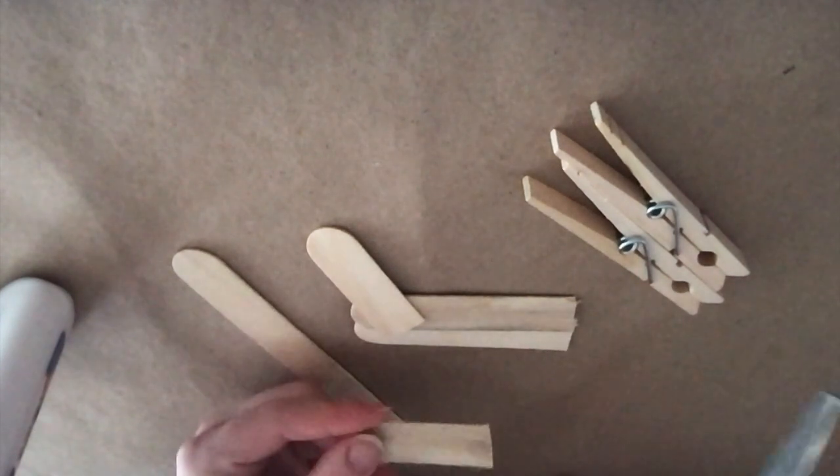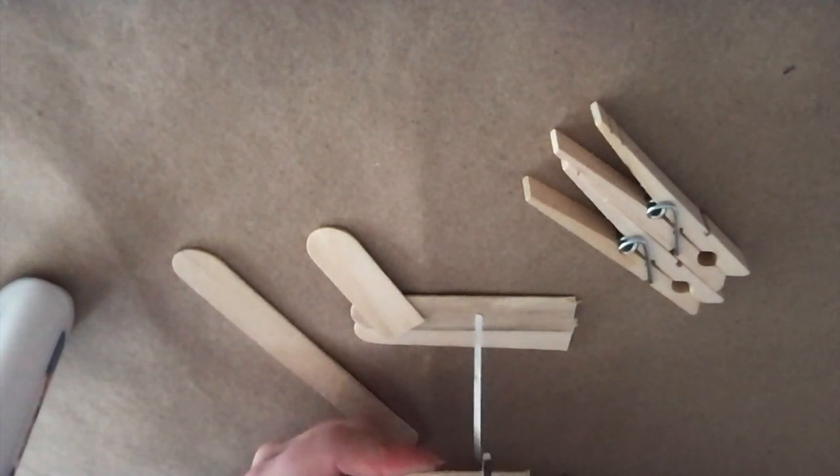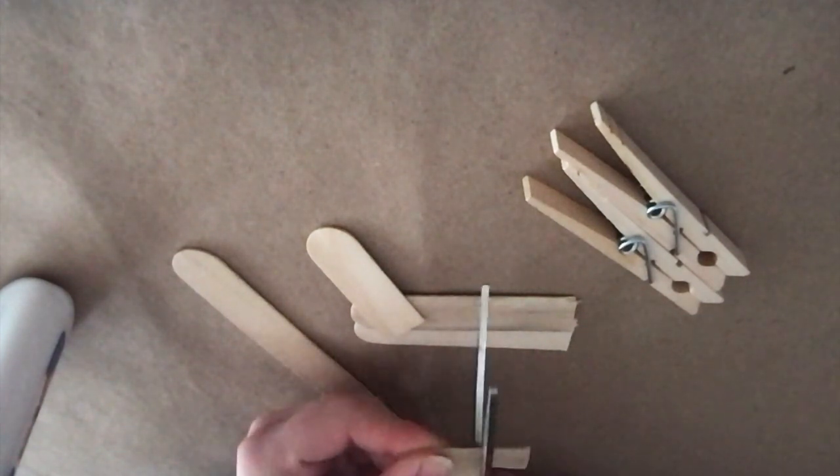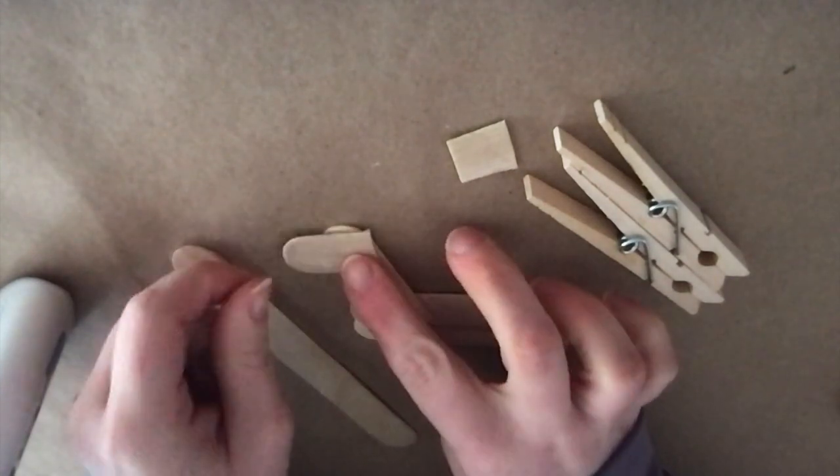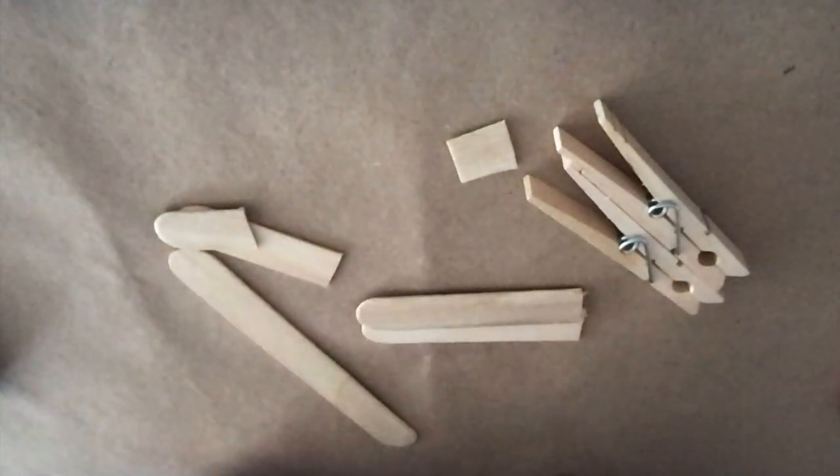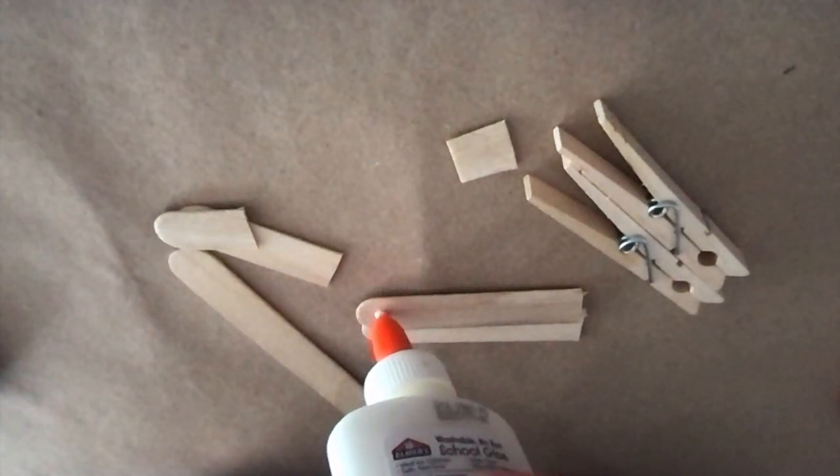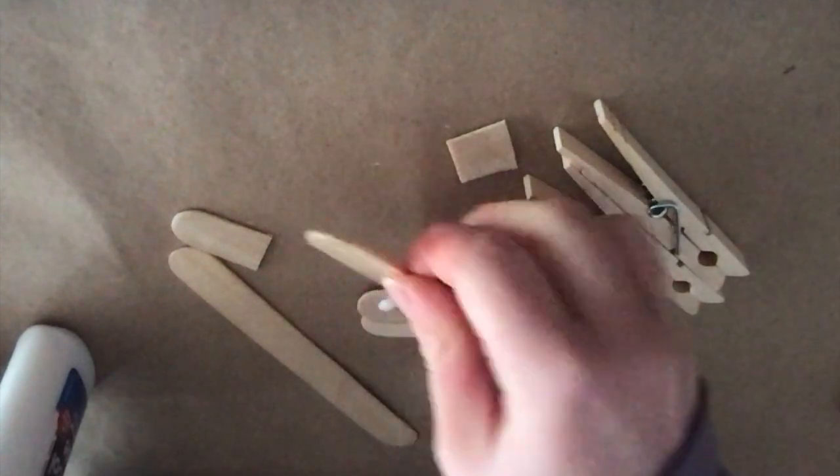What I'm going to do is cut our other piece down to size to make our head, and now we're going to glue these two together as well. So first I'm going to take our glue and put a little bit on our two pieces that are glued together already.